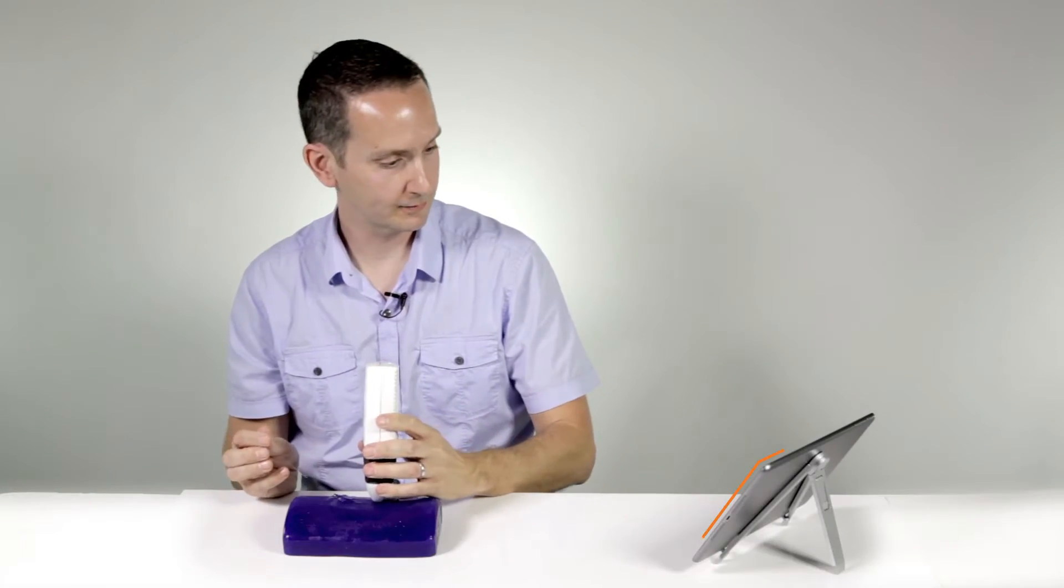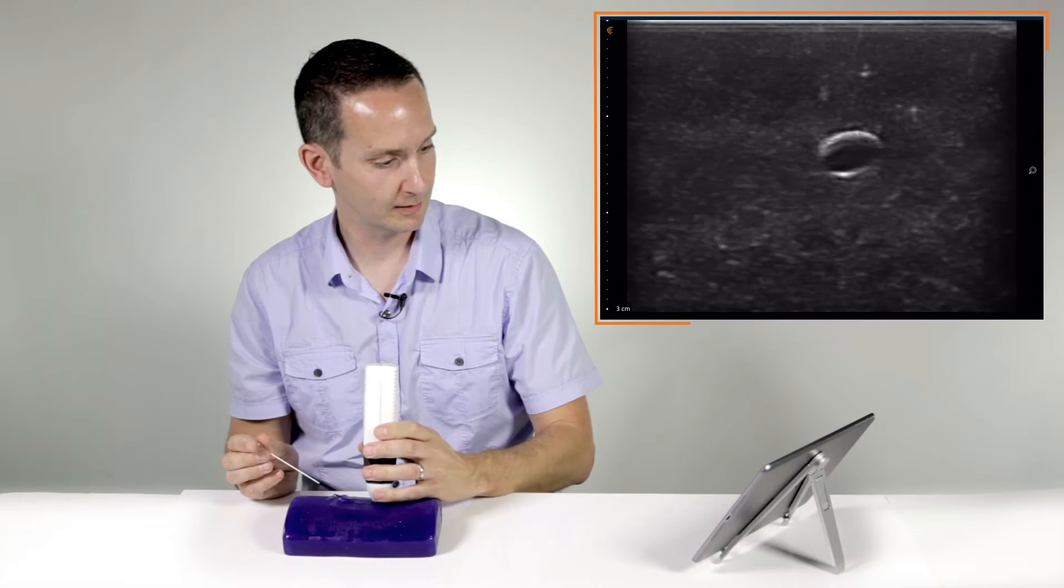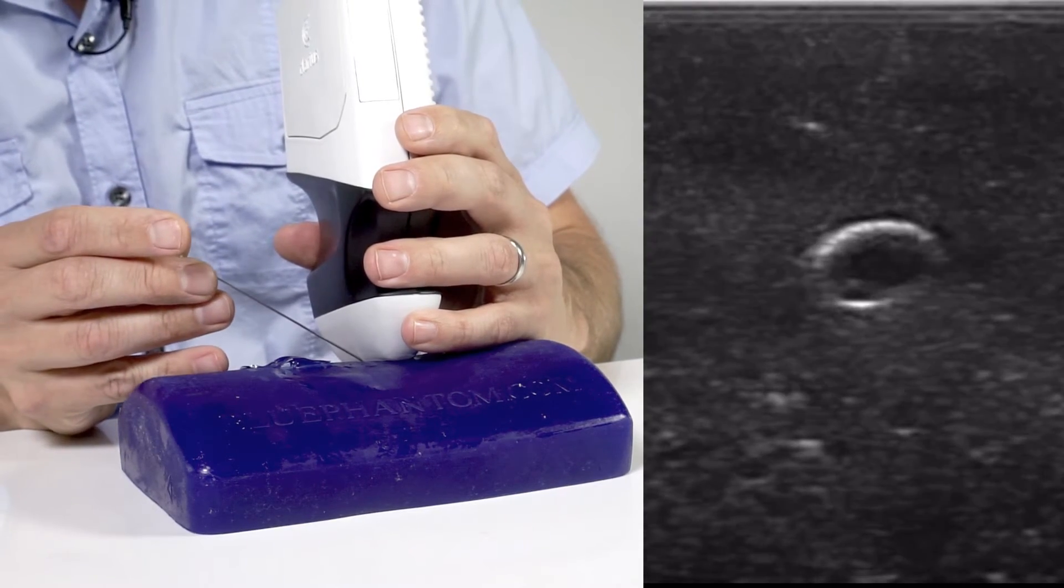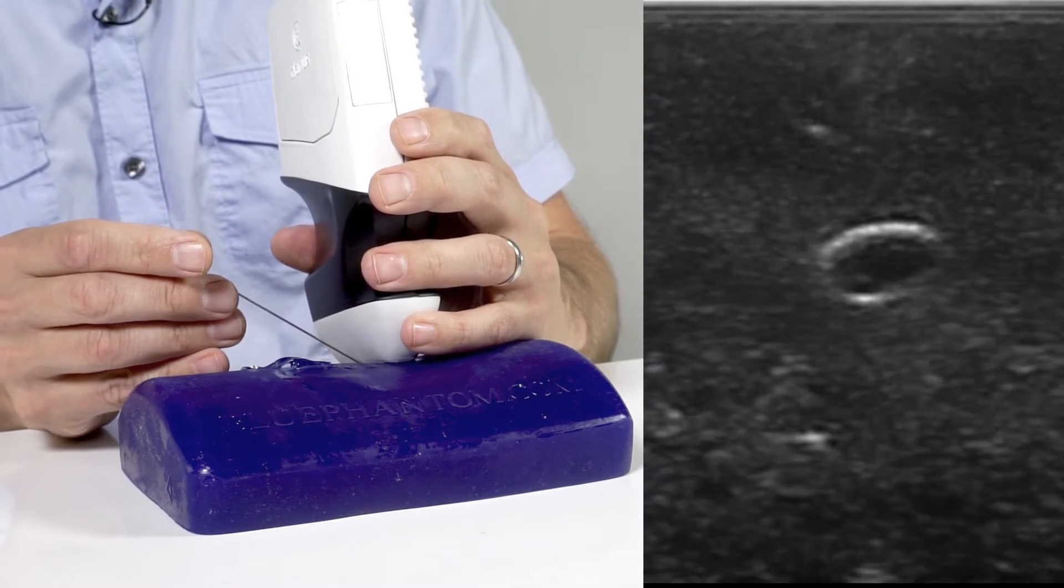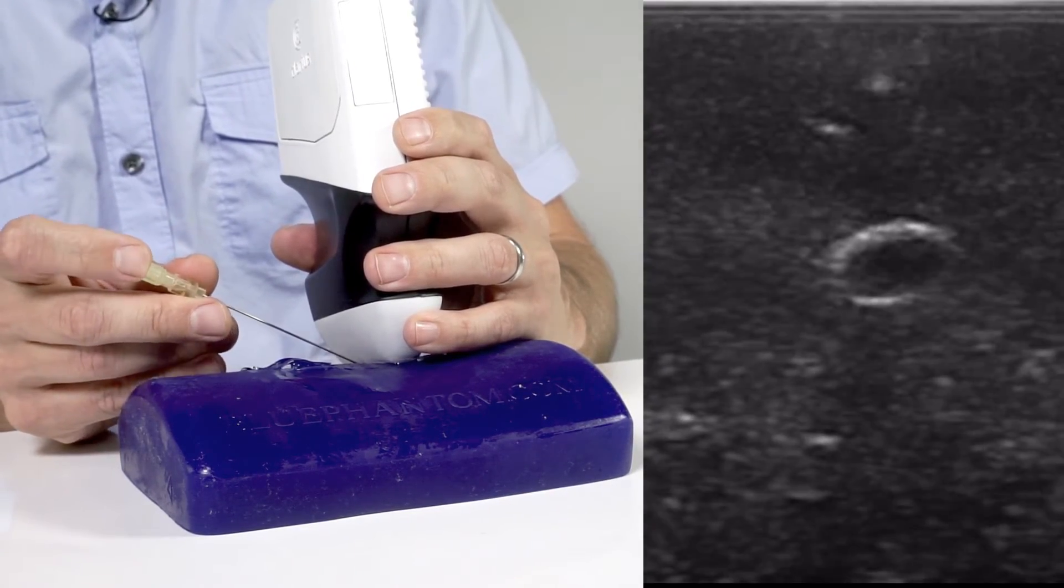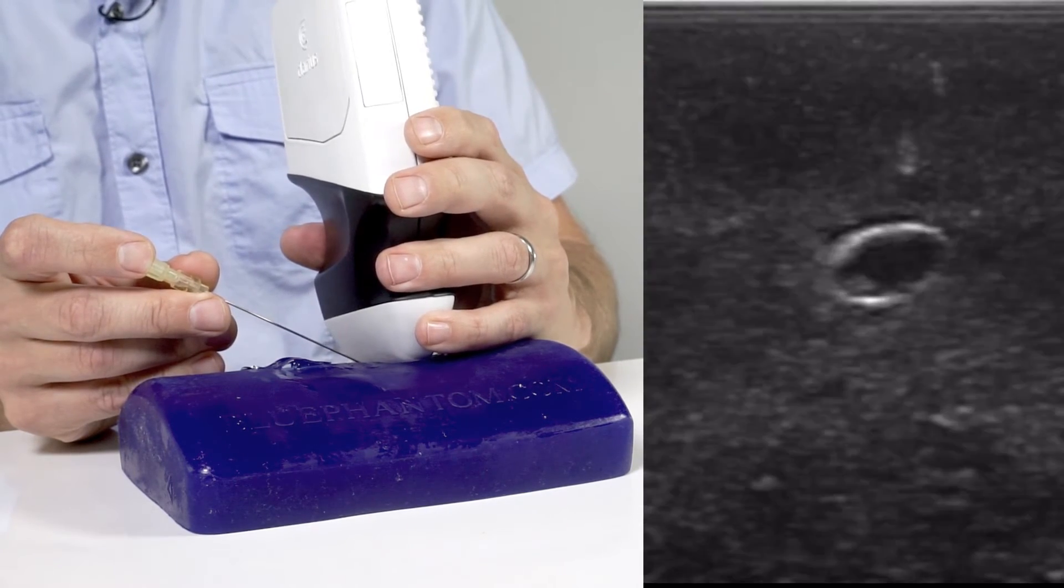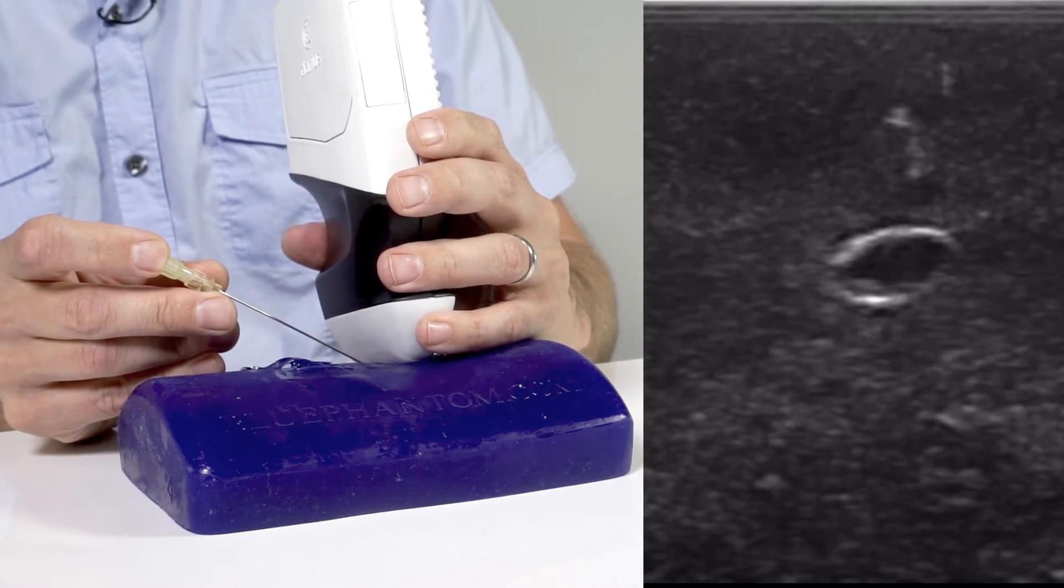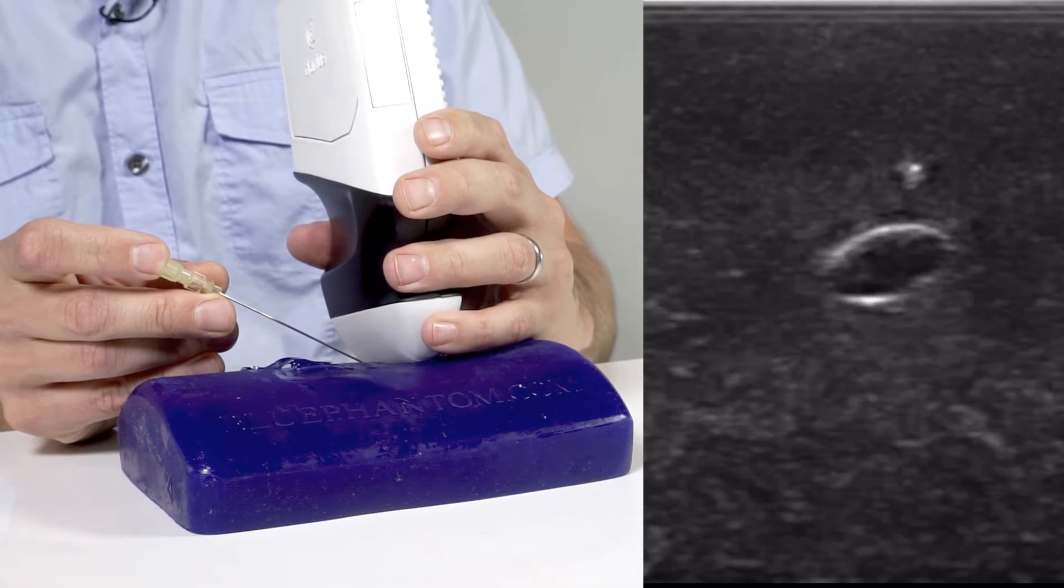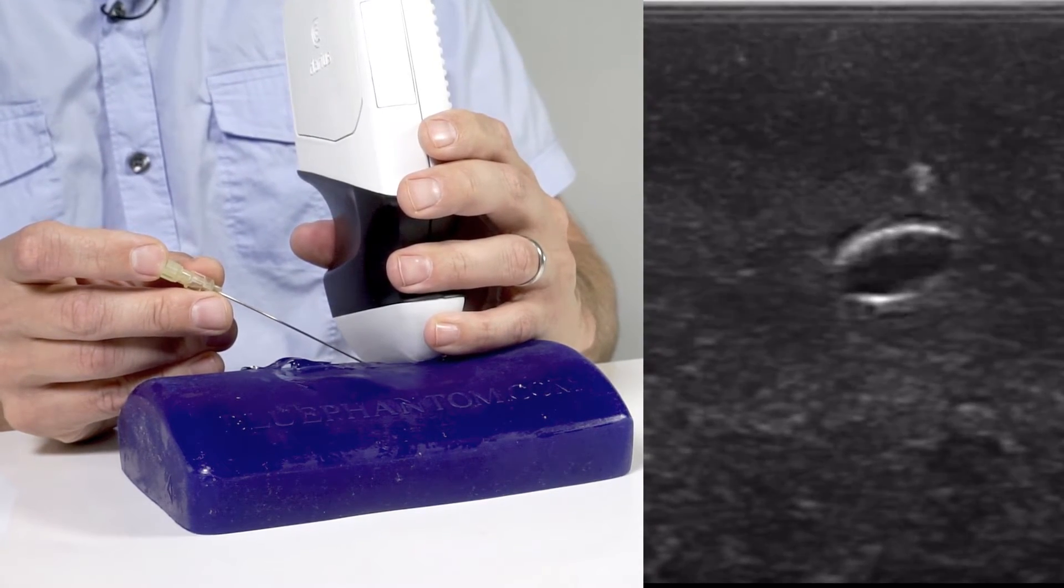With the short axis approach, I'm going to line the vessel up in the center of the screen, introduce the needle on about a 45 degree angle until I see the needle tip on the screen. I'm going to stop moving the needle. I'm going to slide or sweep the probe away from the needle. I'm going to advance it until I see the tip. I'm going to stop moving the needle. I'm going to advance or slide the probe away from the needle.